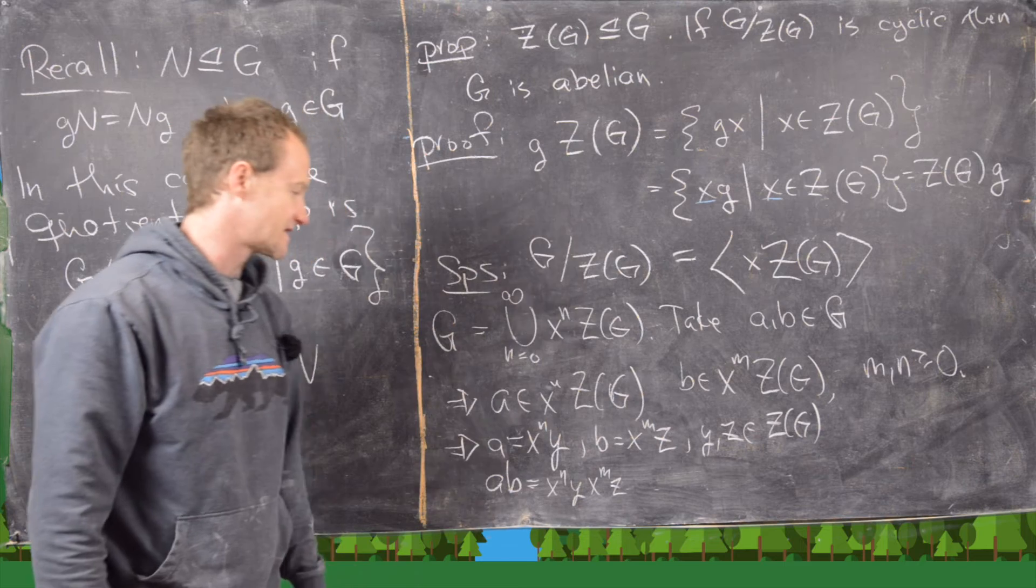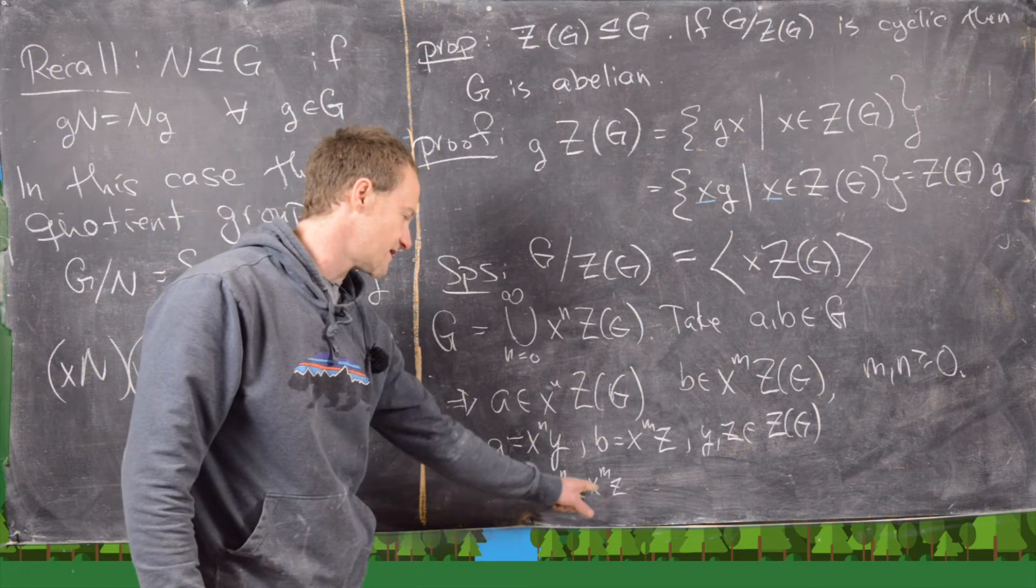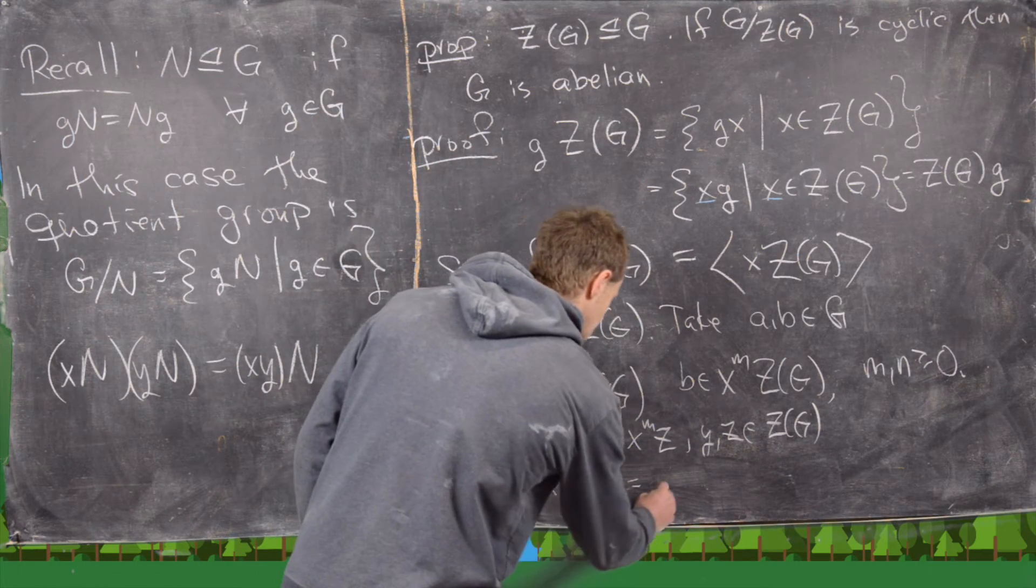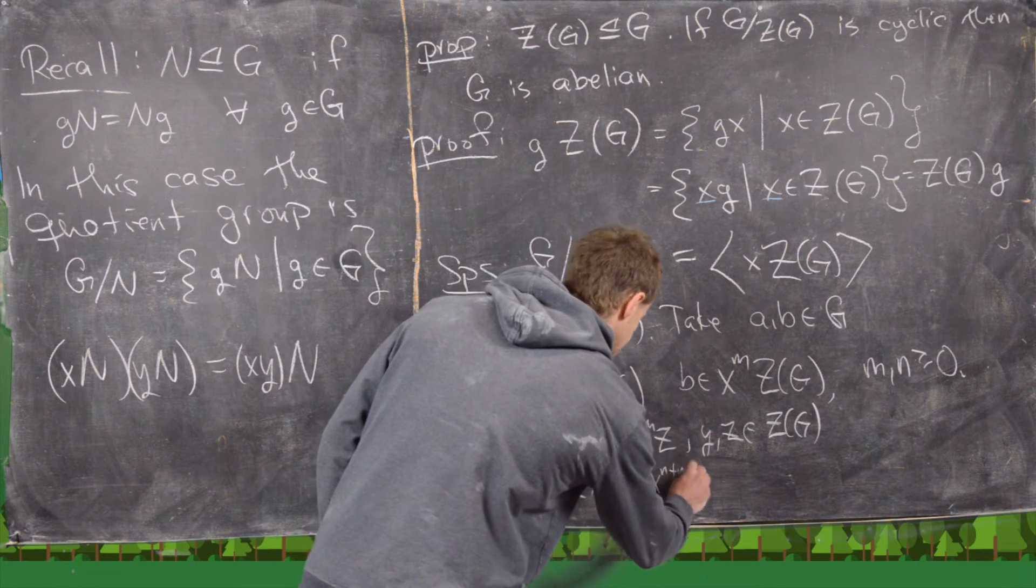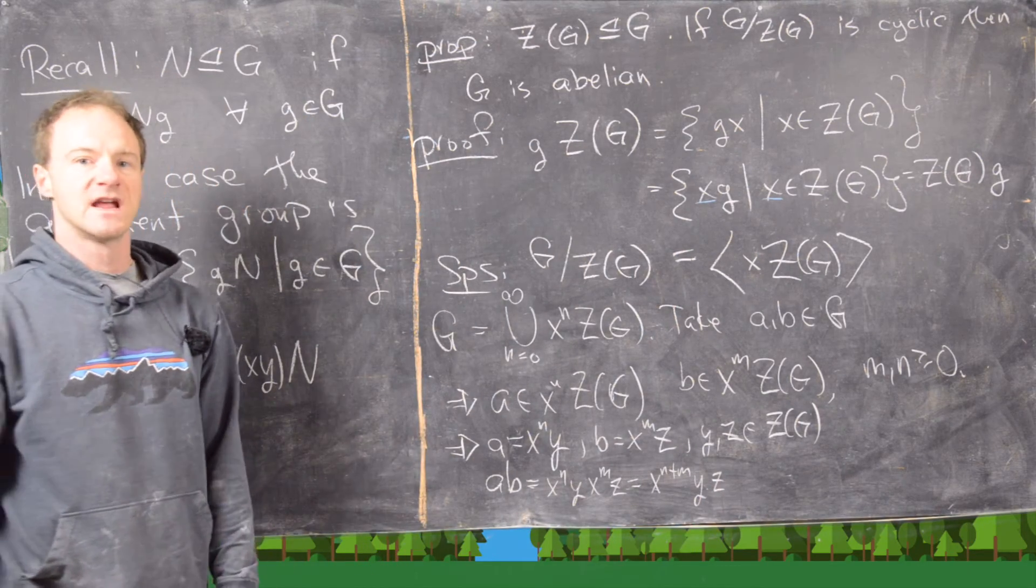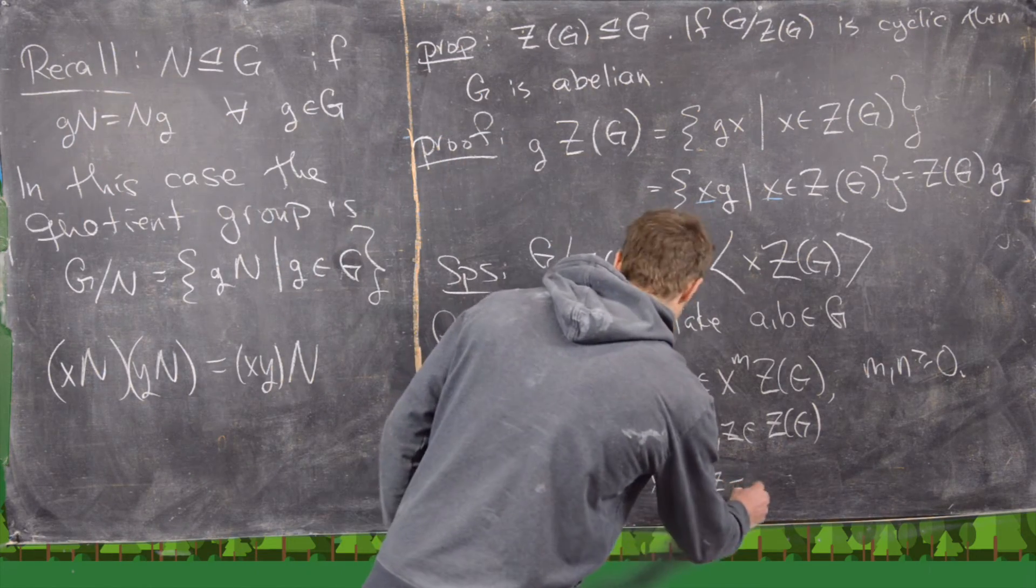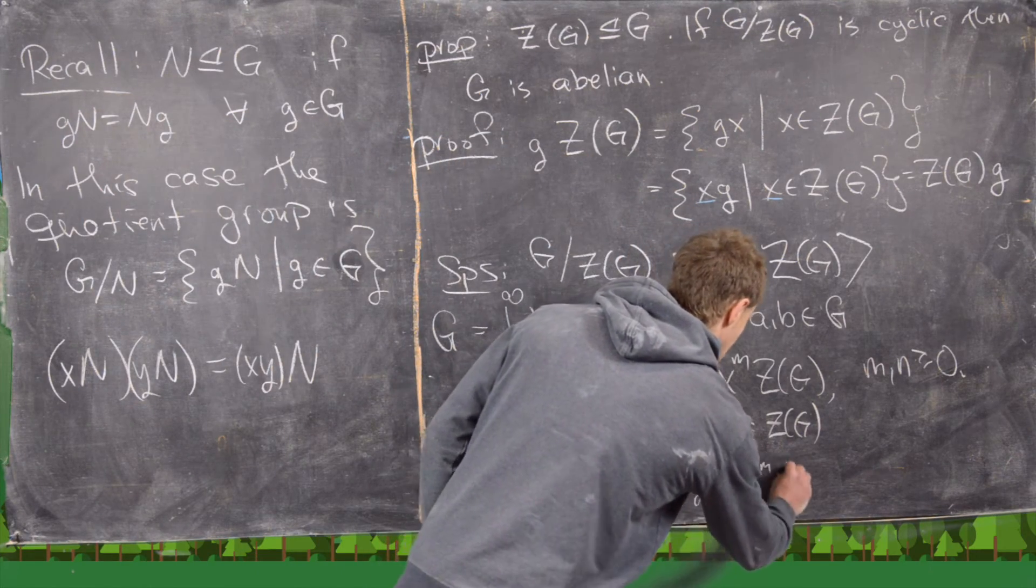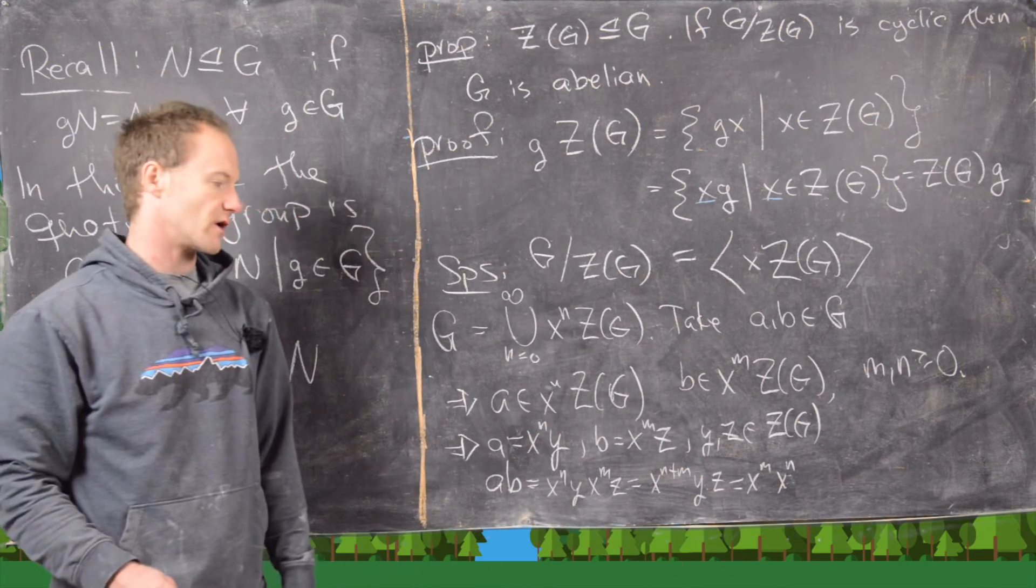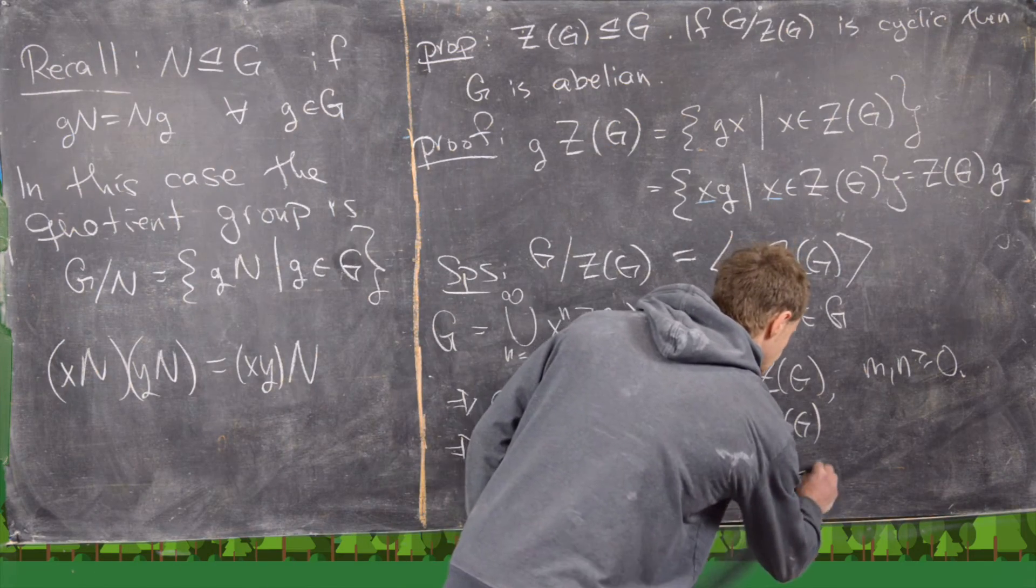And then given the fact that Y is in the center, we can bring this X^M past Y, and that's going to give us X^(N+M) times Y times Z. And now we can do two things. Notice we can split this up as X^M times X^N, and then we can also reverse the order of Y and Z because they're both in the center.